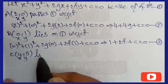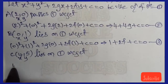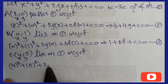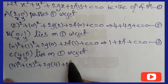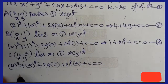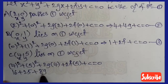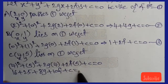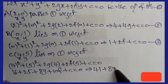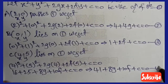Next, point C(4,5) — substitute x = 4, y = 5 into Equation 1. We get: 4² + 5² + 2g(4) + 2f(5) + c = 0, which gives 16 + 25 + 8g + 10f + c = 0, so 41 + 8g + 10f + c = 0. Let this be Equation 4.